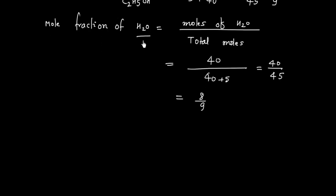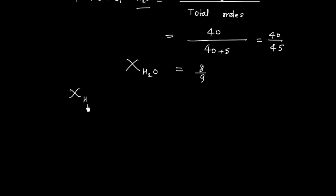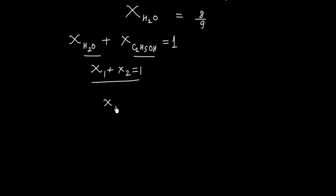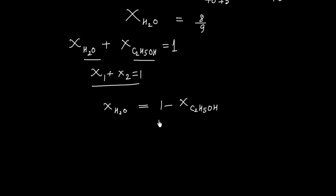The mole fraction of H2O can also be found using the formula: mole fraction of H2O plus mole fraction of C2H5OH equals 1. For a binary solution with two components, x1 plus x2 always equals 1. So x(H2O) equals 1 minus x(C2H5OH), which is 1 minus 1/9, giving 8/9.